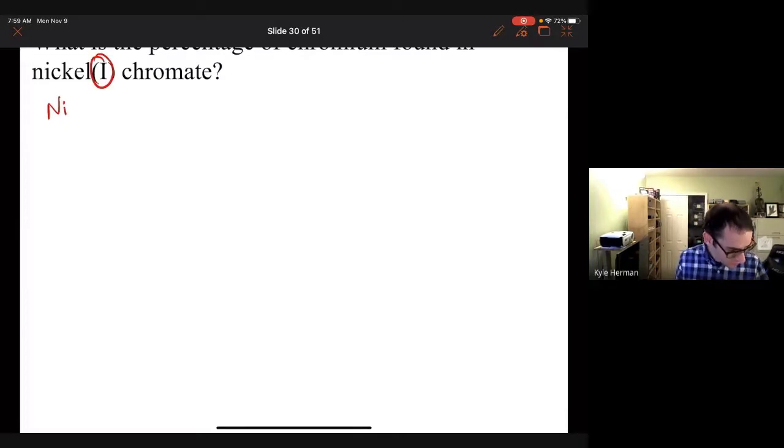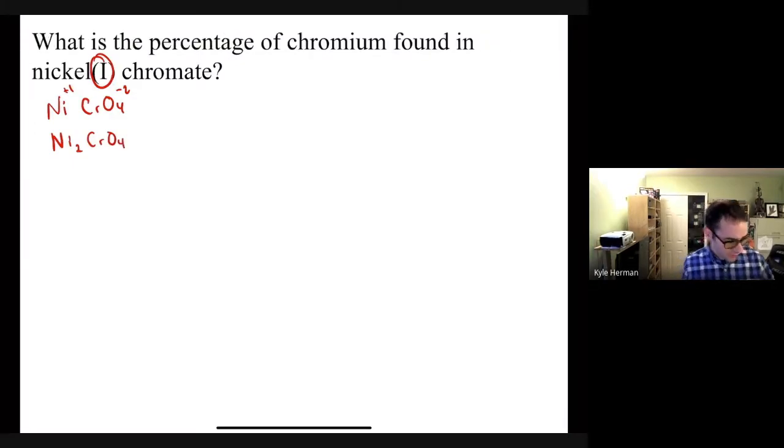Nickel, here it says it's plus one. Chromate is CrO4, that's minus two. This is plus one. So we're going to need two of the nickels. So we'll have Ni2CrO4. Okay, so first thing we did was we figured out the formula for this word here, this nickel one chromate.